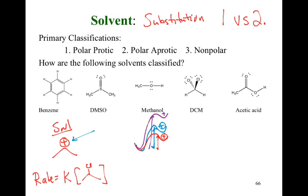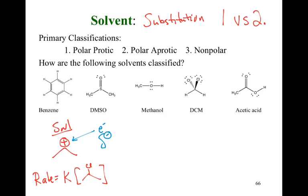We want to make the carbocation as stable as possible. To stabilize a carbocation, I need electrons — specifically the largest partial negative I can possibly get. Which solvent gives me the largest partial negative? The largest partial negative comes from our polar protic solvent. Hydrogen being the least electronegative element gives oxygen the largest negative charge, which stabilizes the carbocation and drops its energy, speeding up our reaction. So for SN1, I want a polar protic solvent.